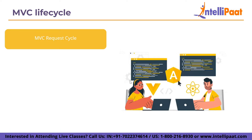Now let's understand the MVC request lifecycle. Routing is the starting point for every MVC application. The received request determines how it should be handled with the help of the URL routing module, which matches the incoming URL to routes defined in the application. Every route has an associated route handler. The MVC route handler retrieves an instance of the MVC HTTP handler if the request matches a defined route. The MVC handler begins the initialization and execution of a controller.